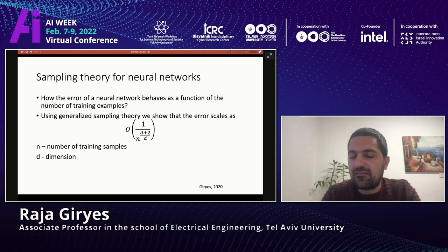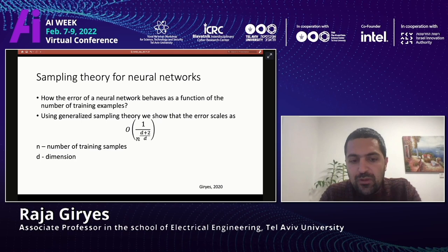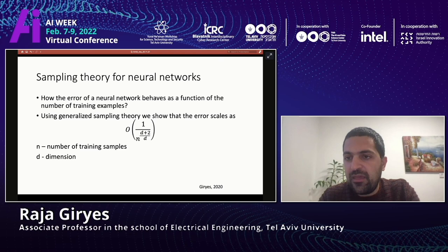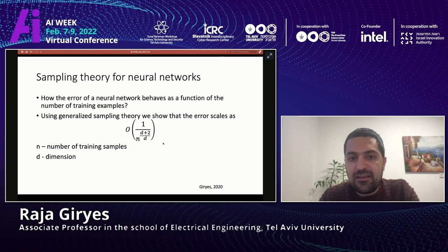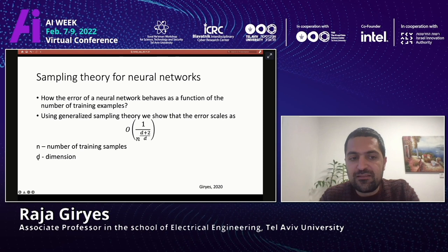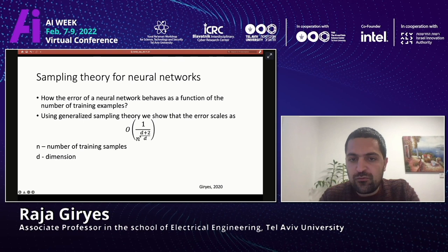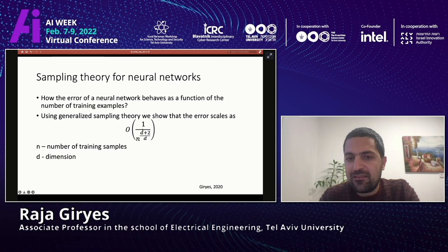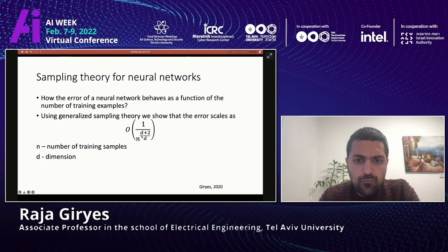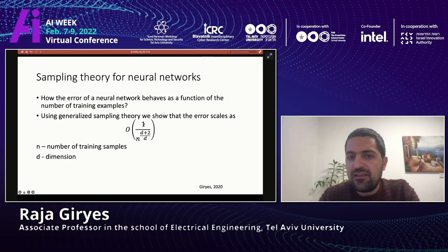So how can we use that? If we assume the mappings that the neural network produces are band-limited, we can use generalized sampling theory to answer how the error of a network behaves with the number of training examples. Specifically, if the number of training examples is N and the intrinsic dimension of the data is D, then the error goes as one over N to the power of (D+2)/D. If the dimension is two, it's one over N to the power of 1.5. If the dimension is very large, things go like one over N.